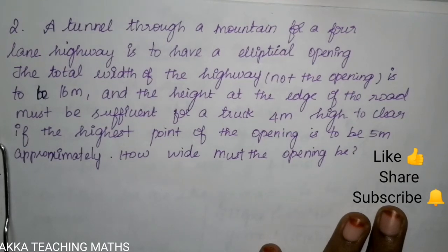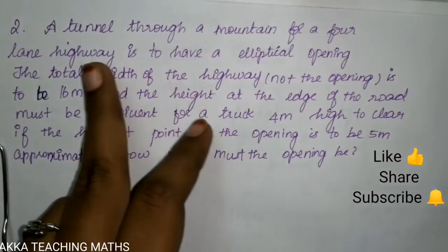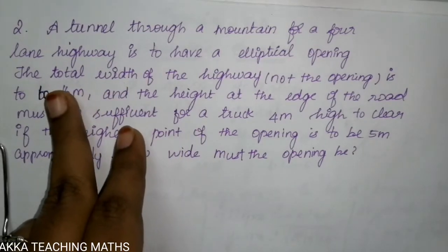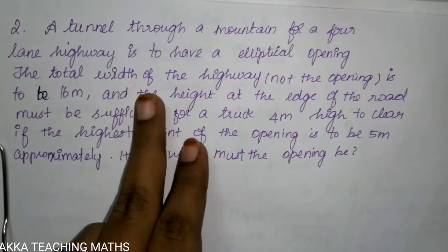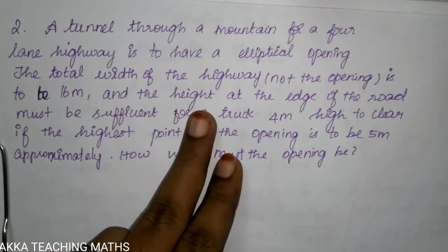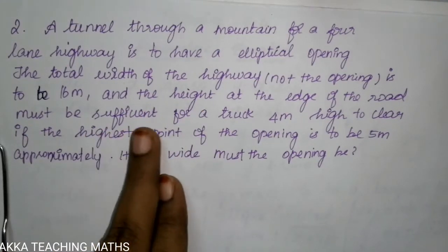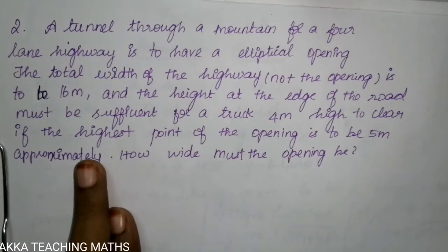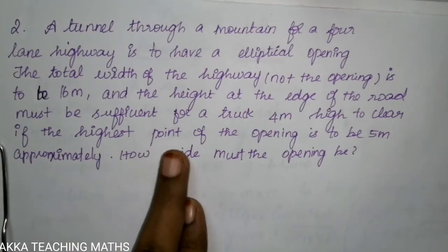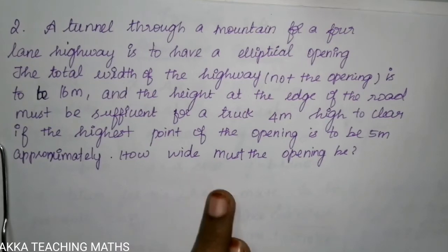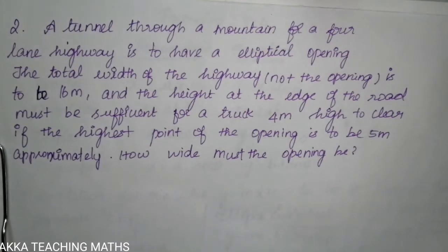Hi friends, welcome to Aka Teaching Max. Second question: a tunnel through a mountain for a four-lane highway is to have an elliptical opening. The total width of the highway is to be 16 meters, and the height at the edge of the road must be sufficient for a truck 4 meters in height to clear. If the highest point of the opening is to be 5 meters approximately, how wide must be the opening?